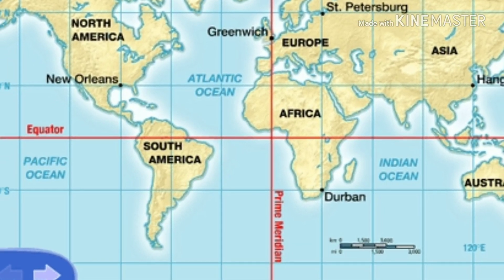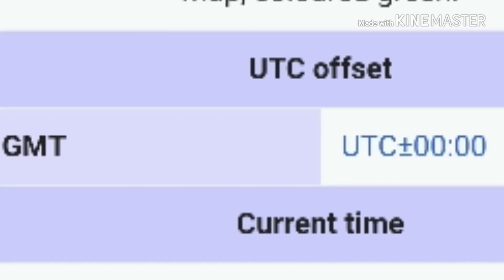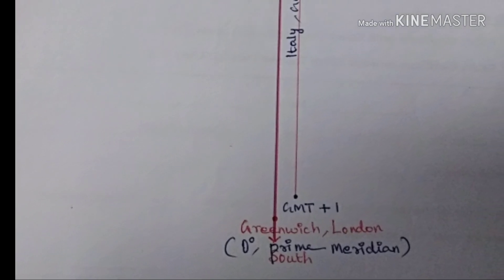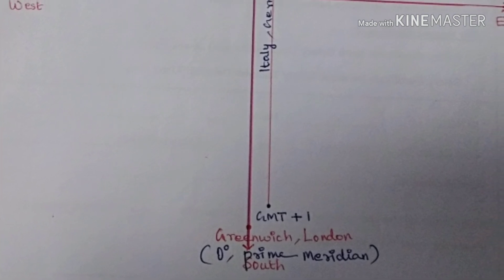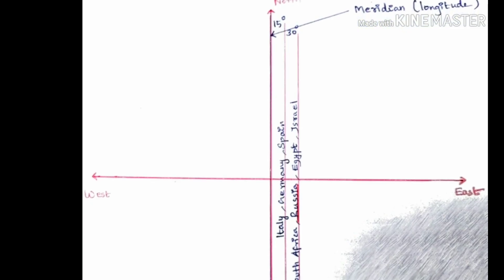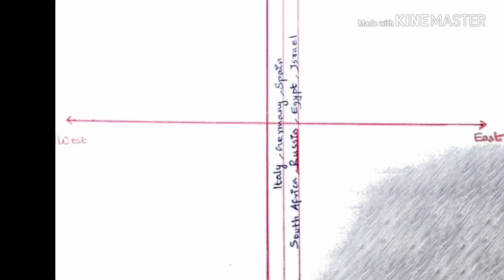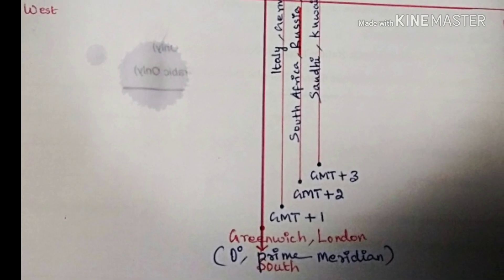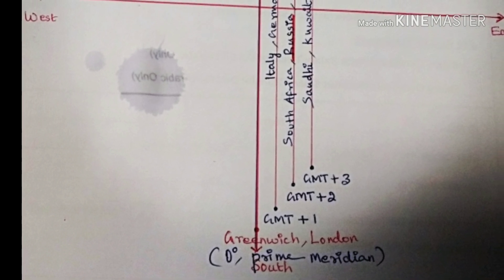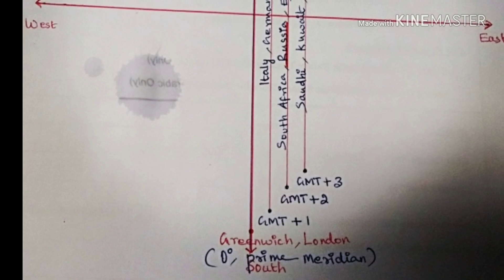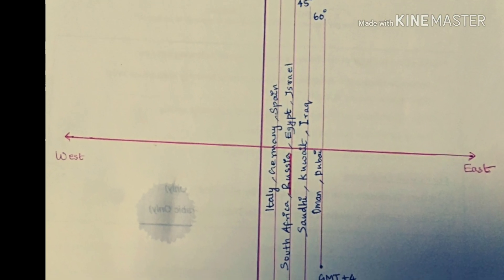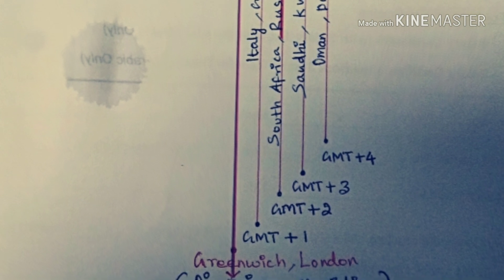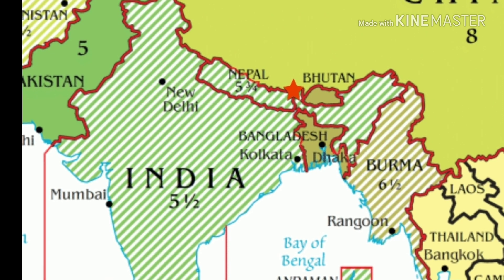GMT plus or minus 00 hours 00 minutes. GMT plus 1 is 15 degrees. In the first time zone, Italy, Germany, Spain and all European countries are GMT plus 1. In the second time zone, South Africa, Egypt, and Israel are at 45 degrees.